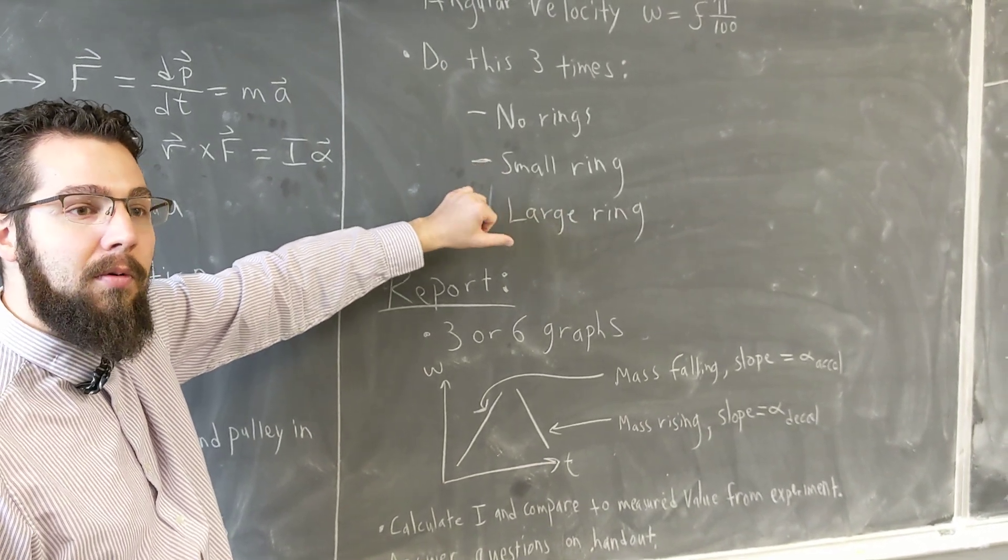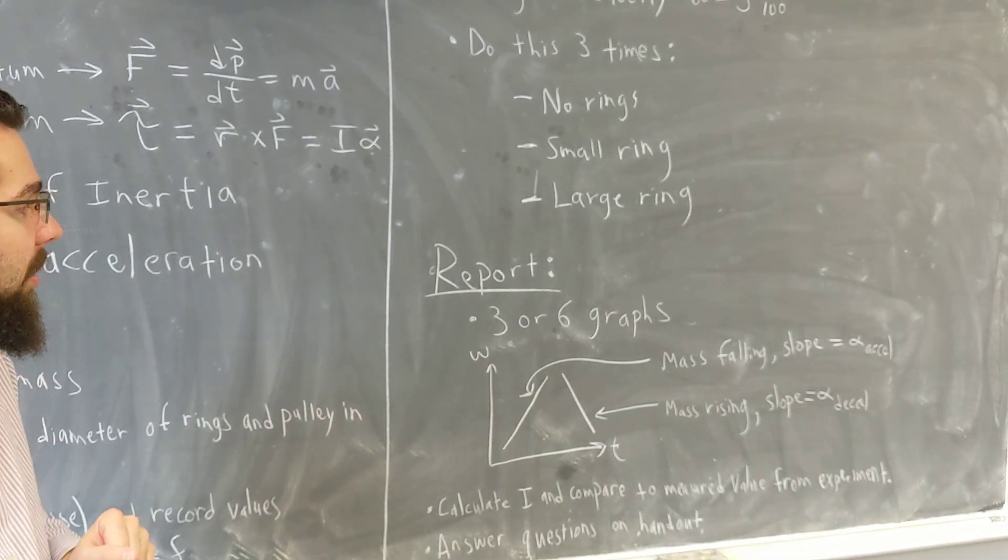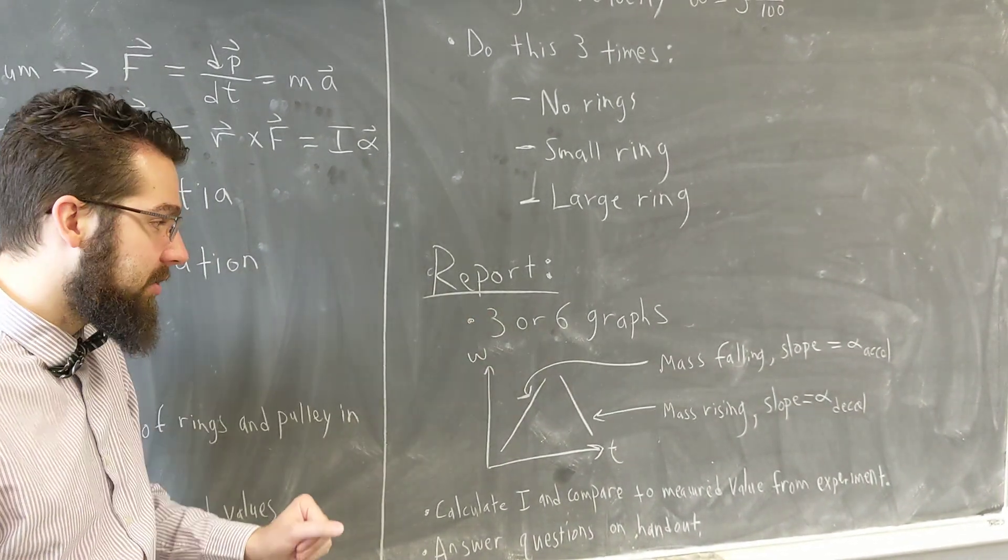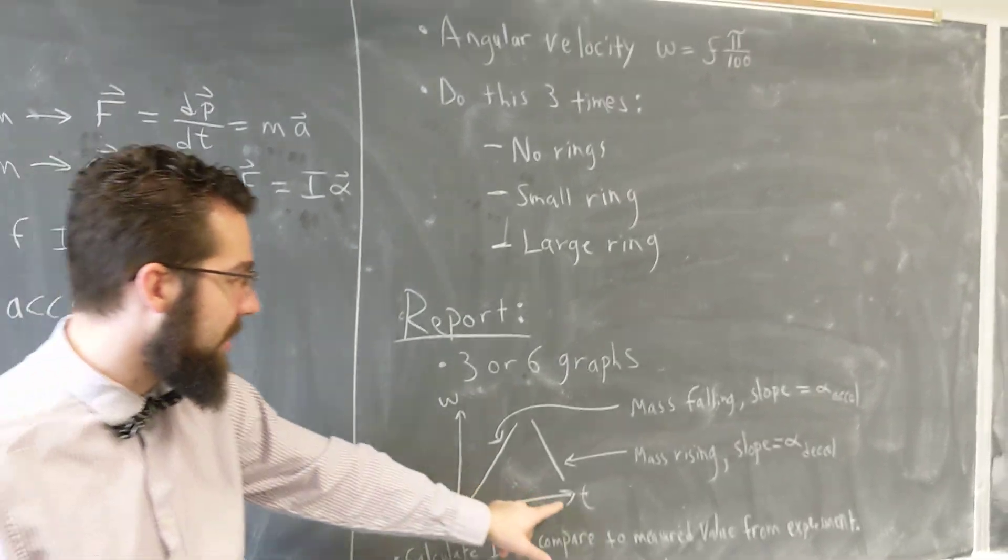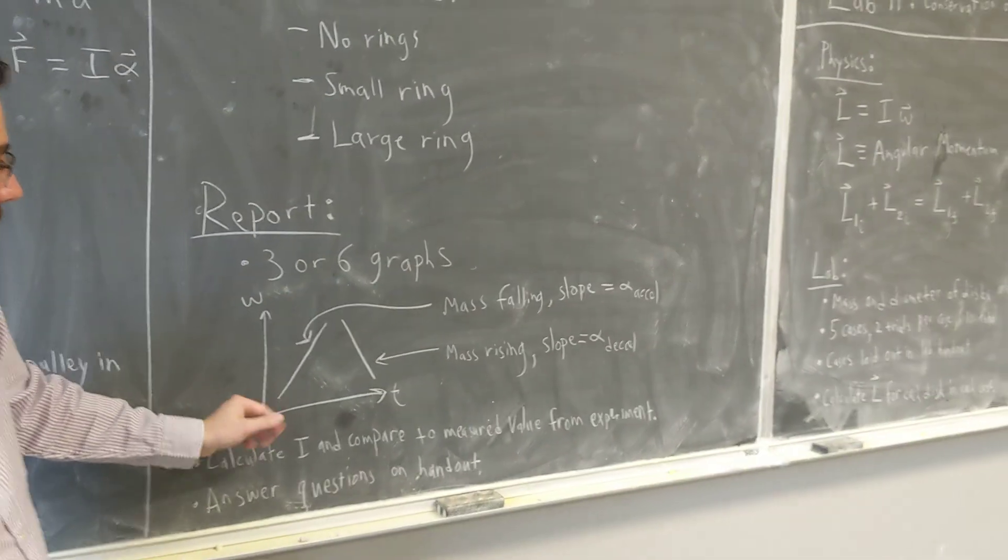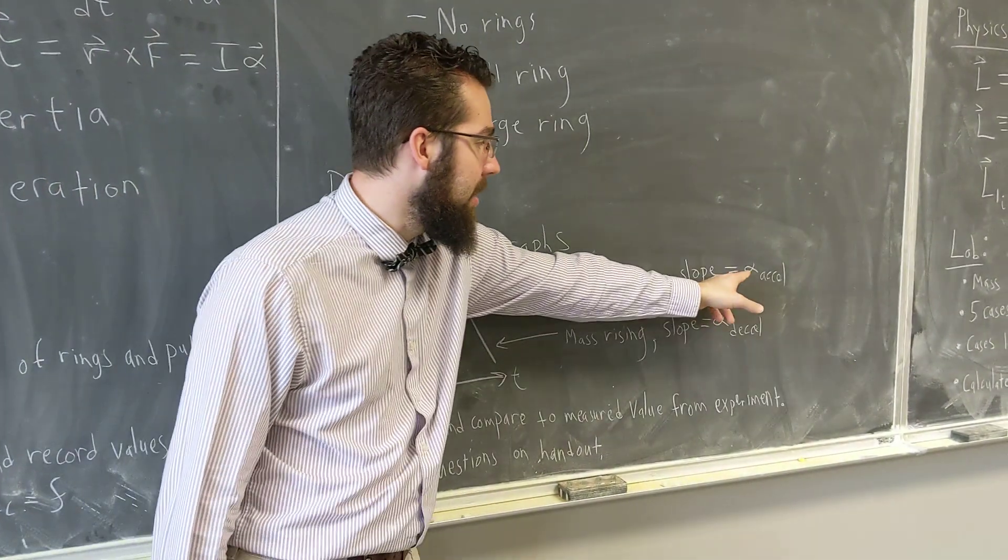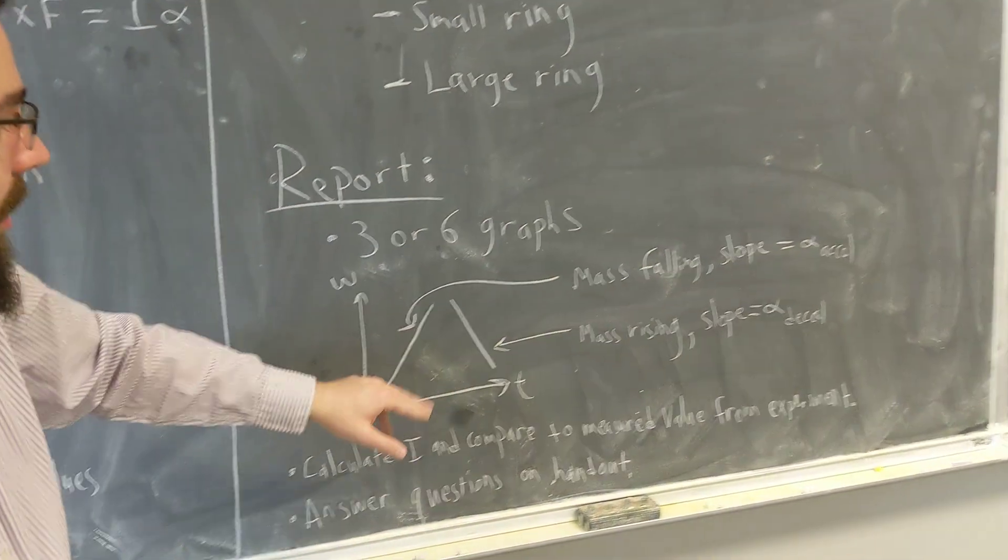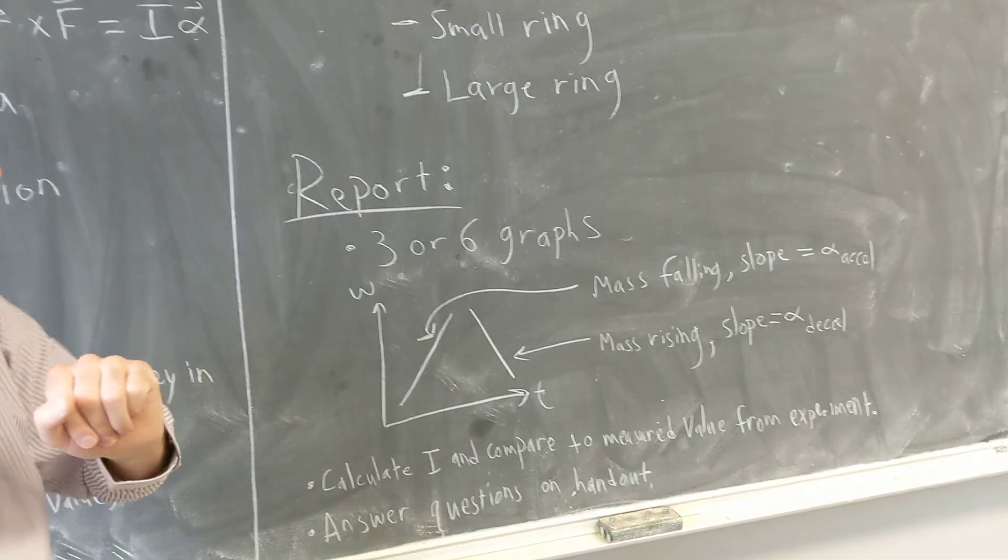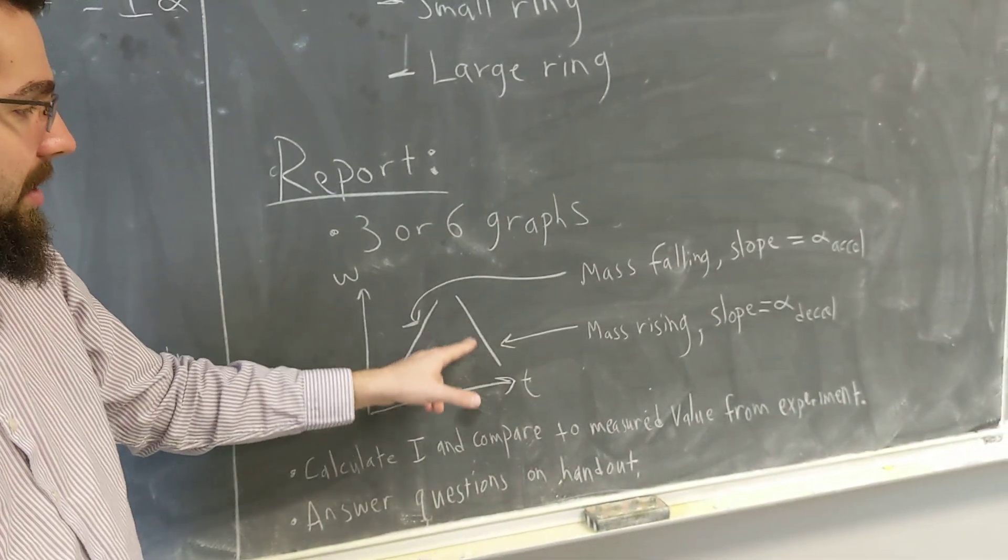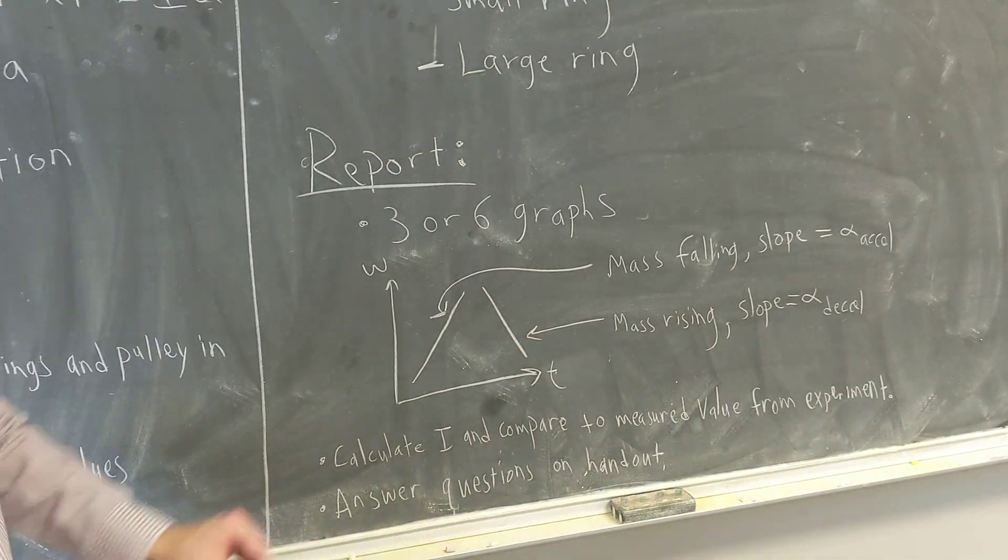Using the data we get, we'll calculate our measured value and compare them. In our report, we'll have three or six graphs. You can make a graph with two series: omega versus time. You'll have data of when the mass is falling with a linearly increasing slope, which we'll call alpha acceleration. When the mass hits the bottom it keeps spinning and comes back up with a linearly decreasing slope, which we'll call alpha deceleration.